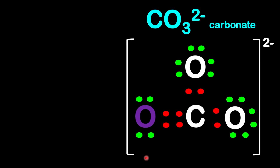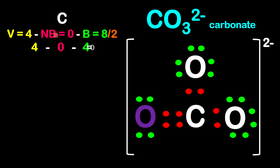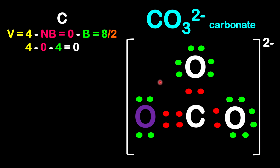Let's look at the carbonate ion. The carbonate ion has a 2 negative charge. Let's start with carbon. Carbon has a valence electron of 4, no non-bonding electrons — so 0 non-bonding electrons on the carbon. We have 8 bonding electrons, all the electrons represented by red. So we're going to have 4 minus 0 minus 4 gives 0.